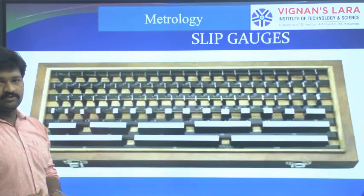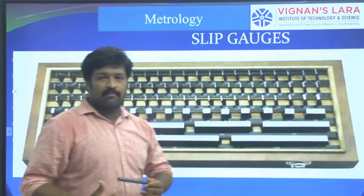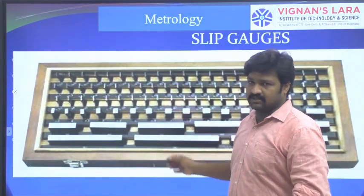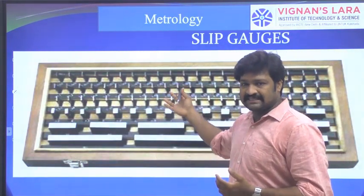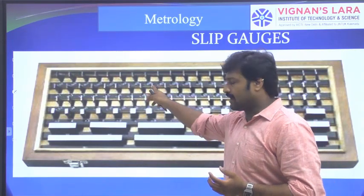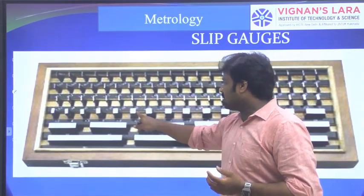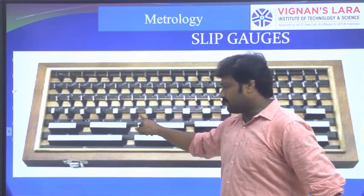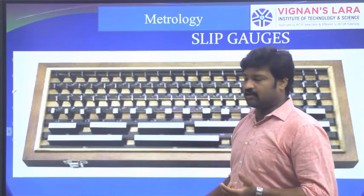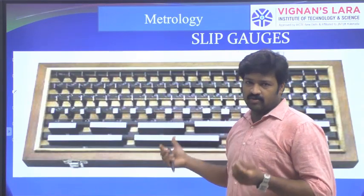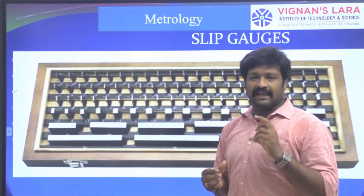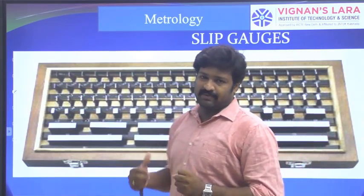Slip gauges are metallic blocks. There are n number of blocks, and we have various sets of blocks. Depending upon the required length, we add a number of blocks together. For example, one block is having 2 mm, another is 3 mm, another is 4 mm. So we need to add the required blocks together to get a required length. That is the application of slip gauges.